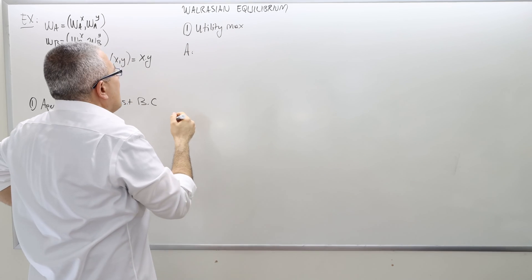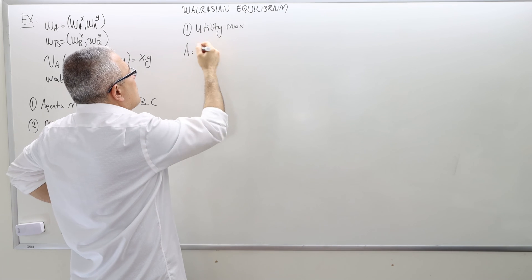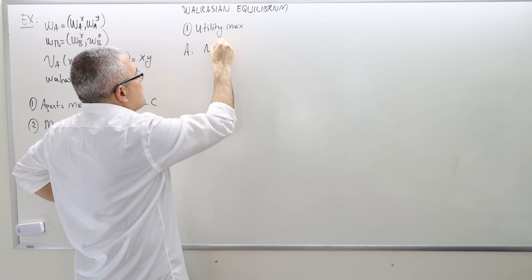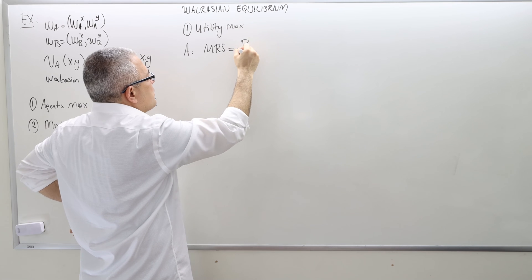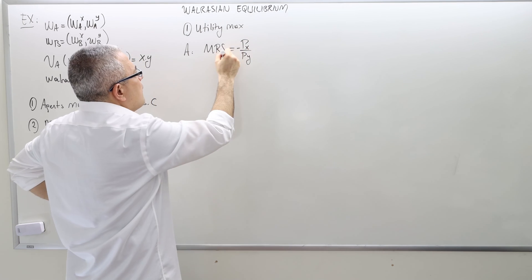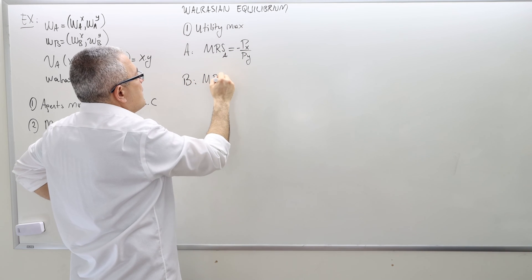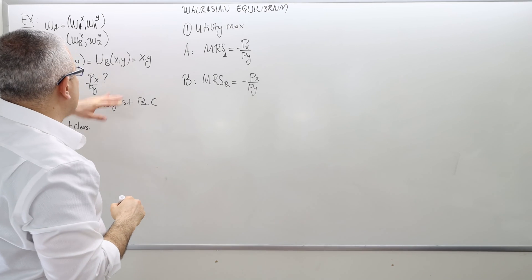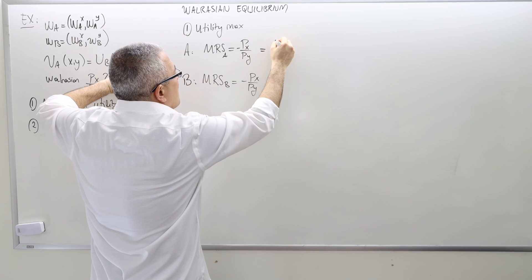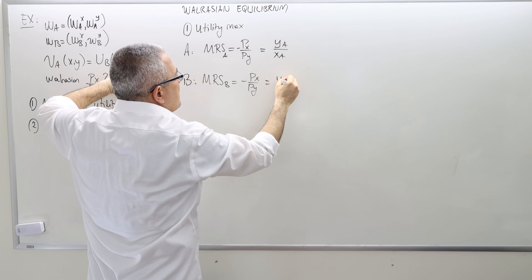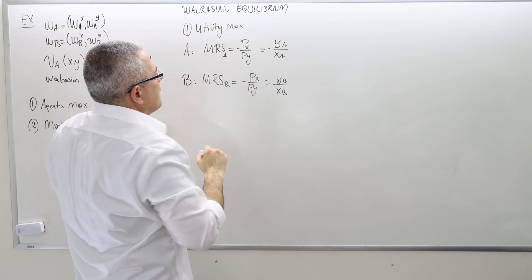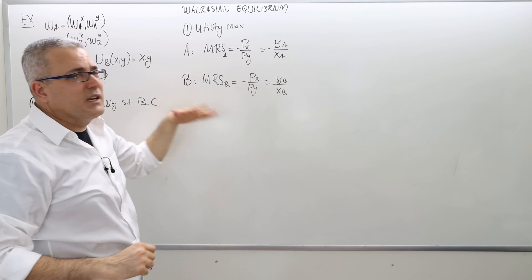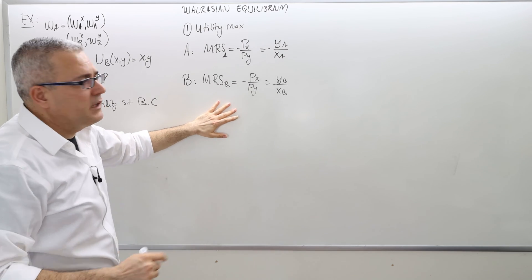Agent A first. Well, agent A or B doesn't really matter. But what we have is, from the utility maximization, the marginal rate of substitution equal to price ratio - px over py. This has to hold for both agent A and for agent B. So what is the marginal rate of substitution for agent A and B? Well, it's simple. YA divided by xA. And this is yB divided by xB. So this is marginal rate of substitution. And this is the price ratio. So I just skipped the derivative part. We already solved this in the previous videos.